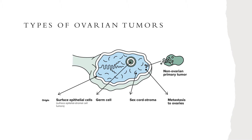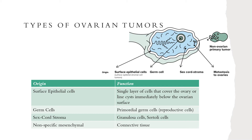Surface epithelial cells are the cells that cover the ovary or line the cyst immediately below the ovarian surface. Your germ cells are your primordial germ cells or reproductive cells, so think of your oocytes. The sex cord stromal cells make up the stroma or supportive connective tissue, or your sex cord cells like the granulosa cells and Sertoli cells. Nonspecific mesenchymal are very rare sarcomas that can develop from the ovaries.